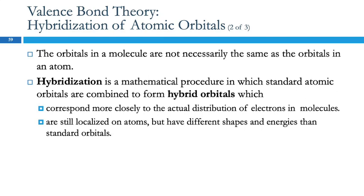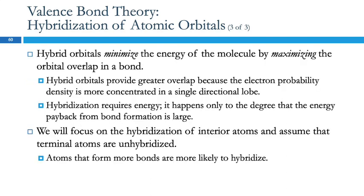These orbitals are still going to be localized on the atoms, but their shapes and energies are going to be different than those standard s, p, d, and f orbitals. The hybrid orbitals are going to minimize the energy of a molecule by ensuring that there's the maximum possible overlap between those orbitals — maximum orbital overlap.